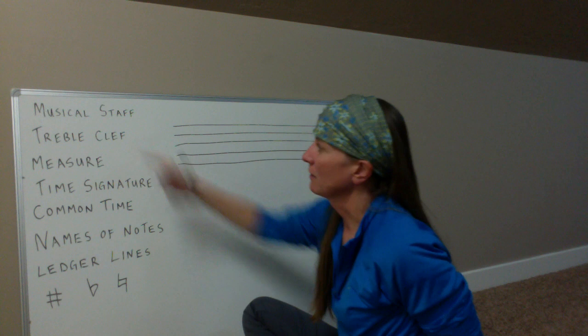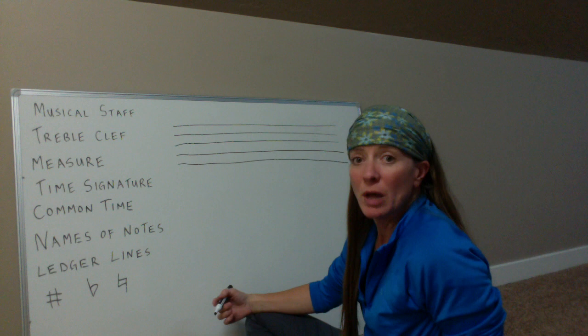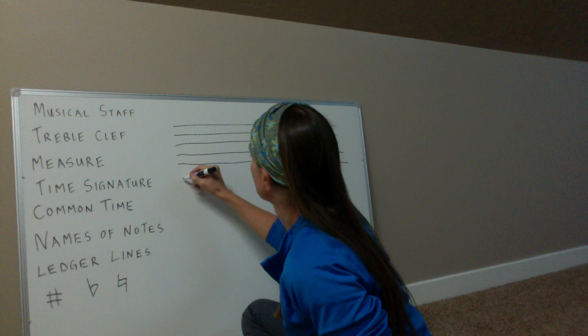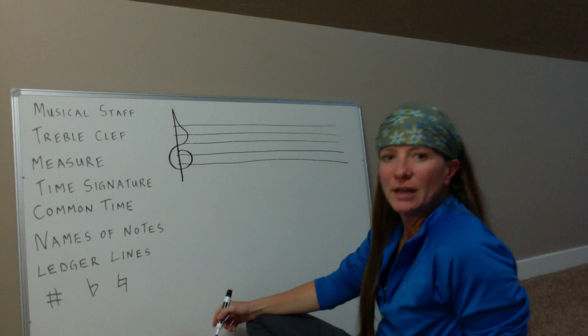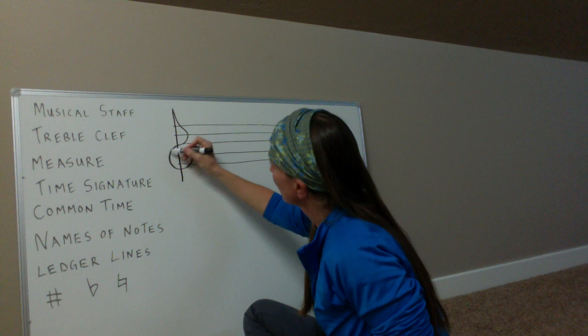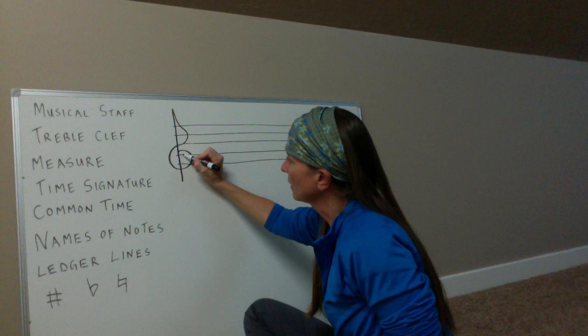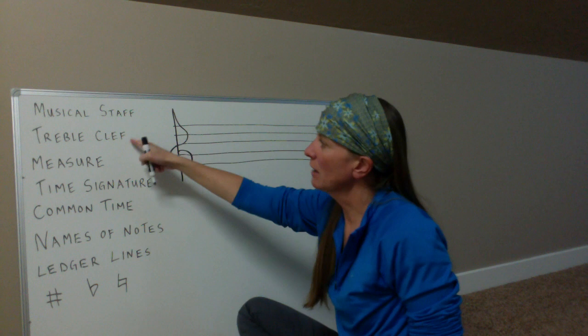Next is the treble clef. The treble clef is what the violin will have at the beginning of your musical staff. It looks somewhat like this. You can see that this roundish, circle-ish thing sort of goes around this line right here. This line is actually the line for the note G, so it can be called the treble clef or the G clef.